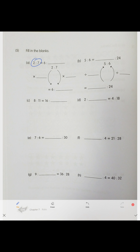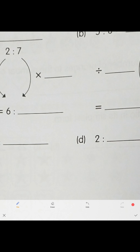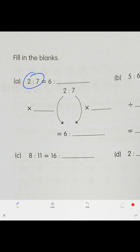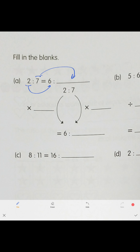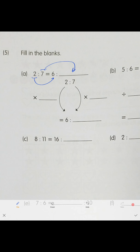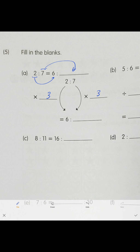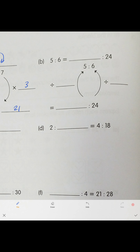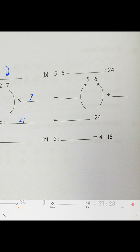Now, how do we transform fractions to find equivalent ratios? We have 2 to 7, and 2 becomes 6. So we're multiplying by 3, meaning both sides multiply by 3. Seven times three is 21, so the equivalent ratio is 6 to 21.